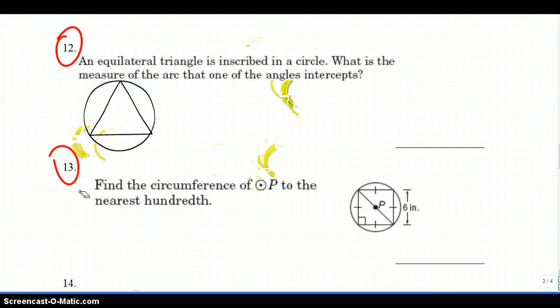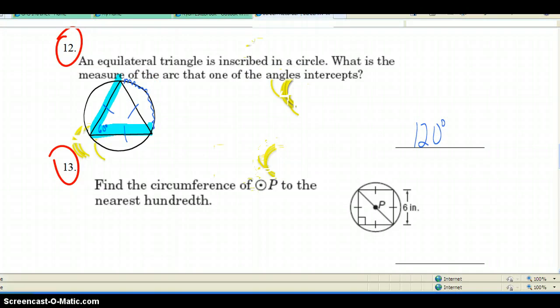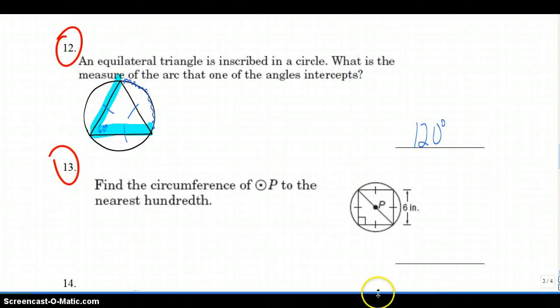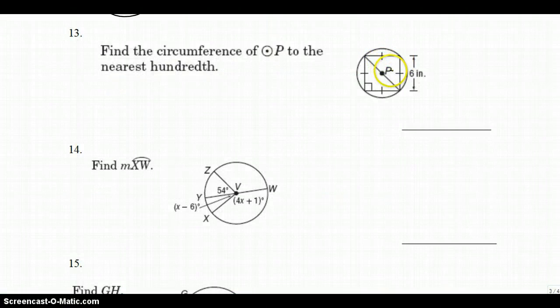This is problem number 12. We have an equilateral triangle that is inscribed in a circle. So here is our equilateral triangle. This angle is 60 degrees. The question is, what is the measure of the arc that one of the angles intercepts? So we're talking about taking this turquoise angle, and we're intercepting this arc angle over here. And since 60 is an inscribed angle, we double that to get the measure of that arc angle, which is 120 degrees.